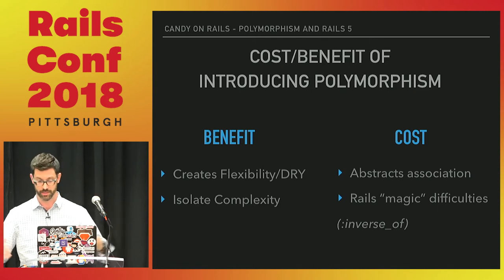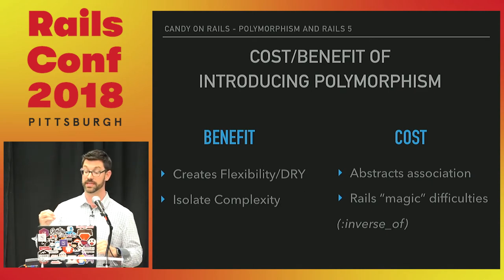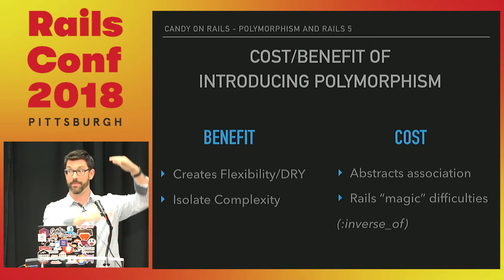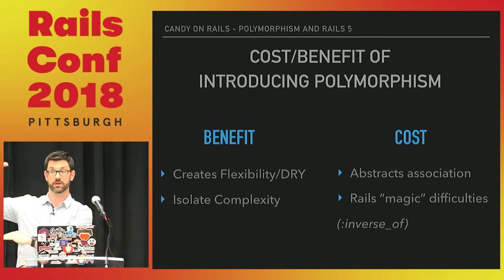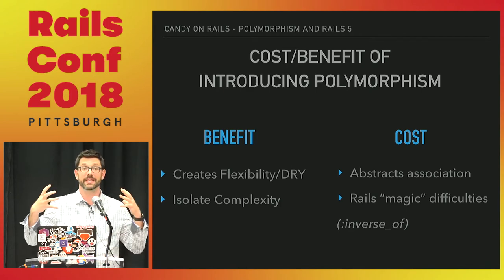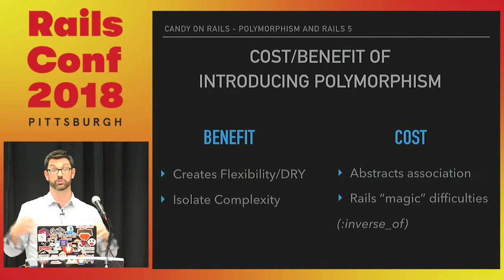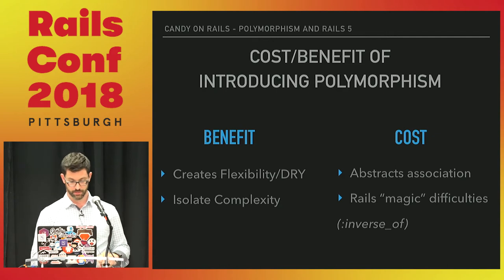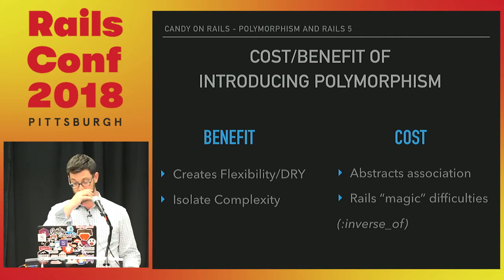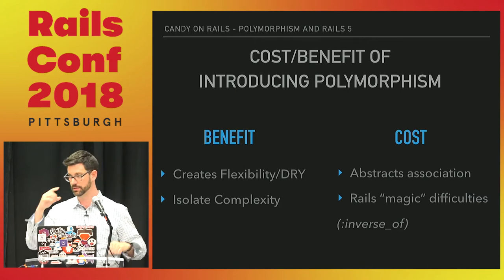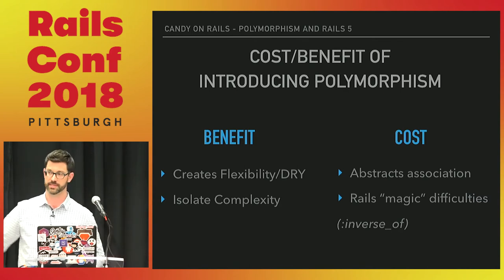What are the benefits of using polymorphism? As we've talked about, it allows for a significant amount of flexibility and provides some dryness with these associations. As our packaging continues to grow, shift, and change, we've isolated all that complexity to this one association. Cost: it is, in itself, abstraction. And abstraction can be dangerous. You have to be very conscious when you are abstracting things — you are doing so for a good reason. As things become abstract, they're harder to read, they're harder to maintain. We just kind of push them off to the side — it becomes a black box thing.